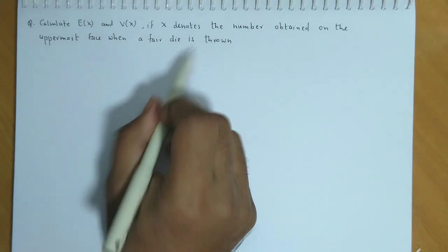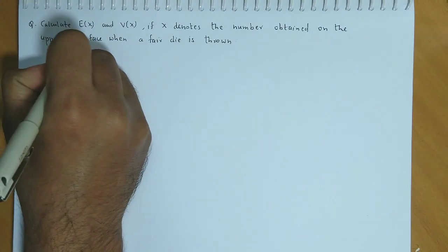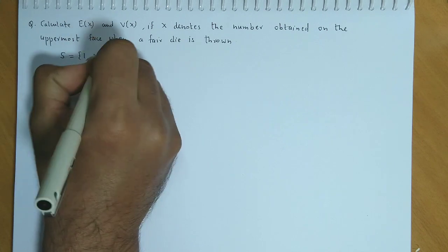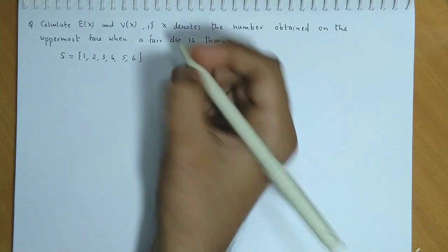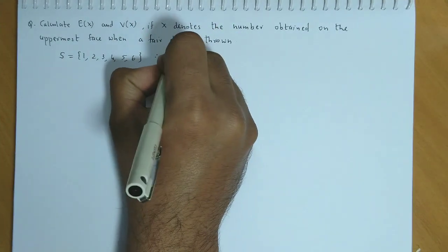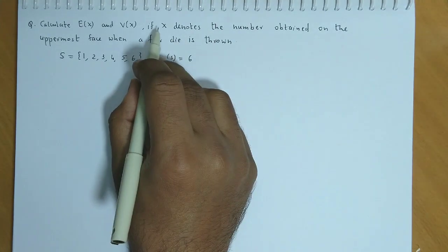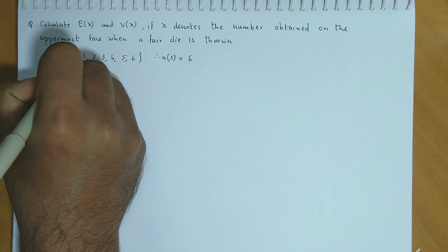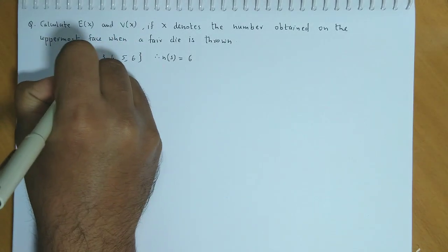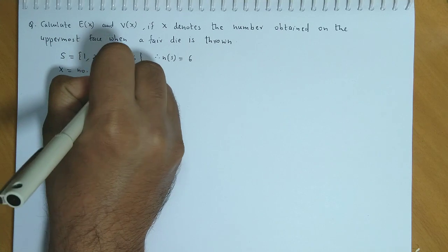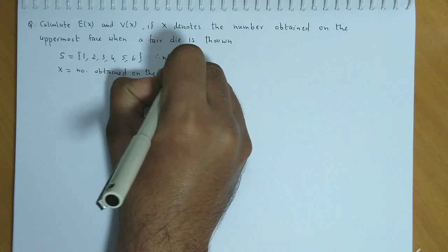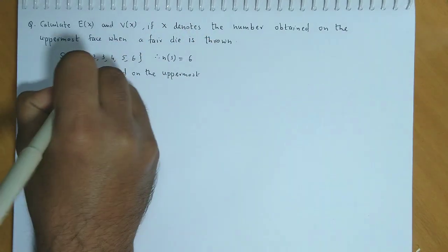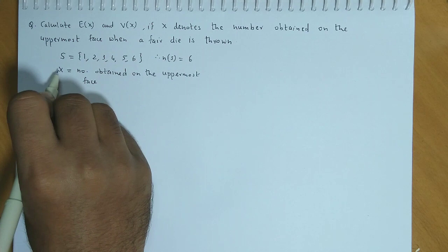When we toss a fair die, the sample space is {1, 2, 3, 4, 5, 6}, so N(S) is 6. Here X is the number obtained on the uppermost face — this is the random variable.